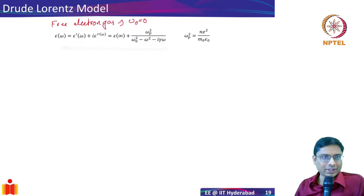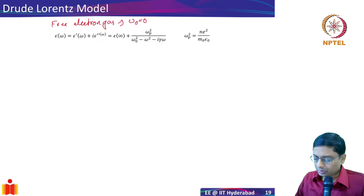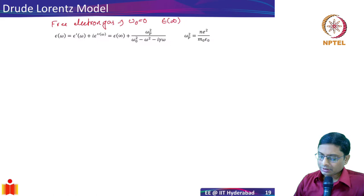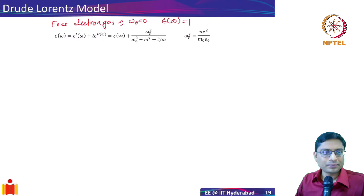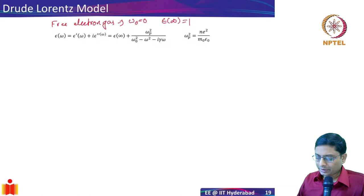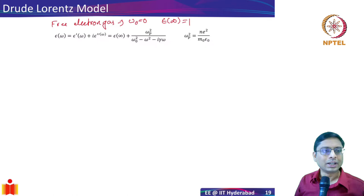Taking the Lorentz oscillator term from the previous lecture and substituting omega-naught equal to zero, we also set epsilon-infinity to one for simplicity. In real metals, epsilon-infinity is some number obtained by fitting experimental data or from data sheets. We call the resulting model the Drude-Lorentz model, because the behavior of metals was first described by Paul Drude, and we combine that with the Lorentz model to give credit to Paul Drude.